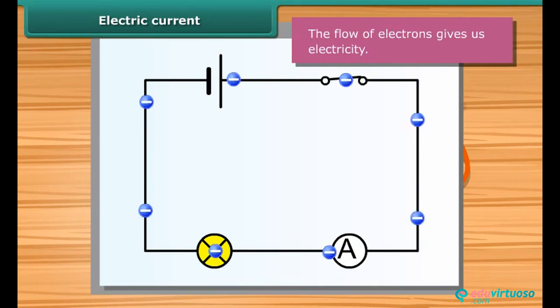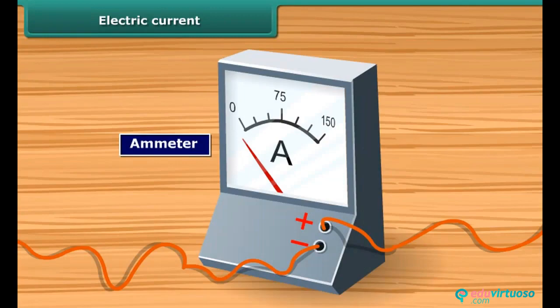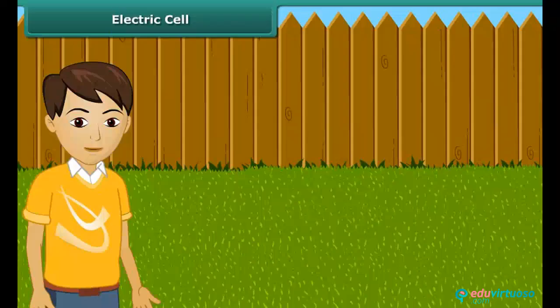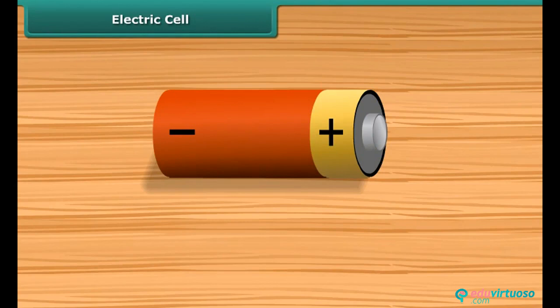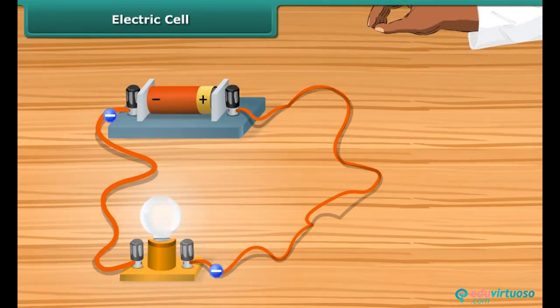The flow of electrons gives us electricity. Electric current is measured by an ammeter. A dry cell battery used in a torch or transistor radio is a source of electric current. Every battery has two terminals marked plus and minus. When a metallic wire connects these two terminals, the electrons resulting from chemical reaction start flowing through the wire, constituting an electric current.